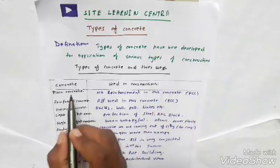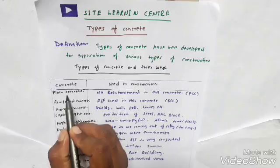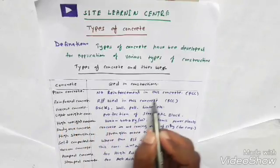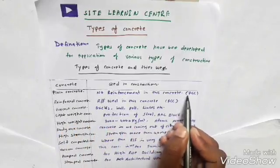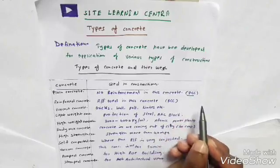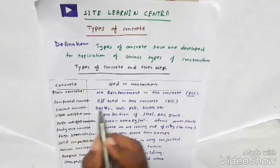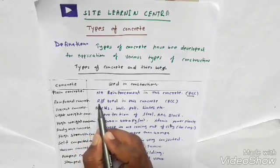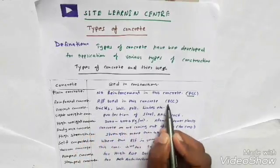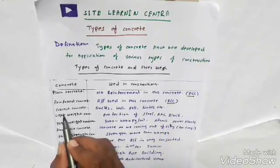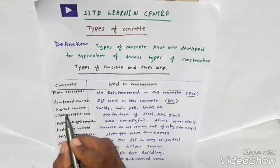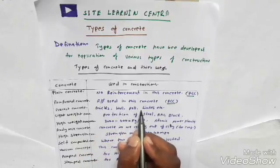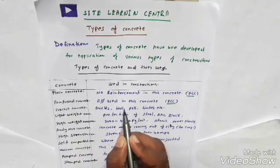First is plain concrete. In plain concrete, there is no reinforcement — this concrete is called PCC (Plain Cement Concrete). The second is reinforced concrete, where we have reinforcement steel inside the concrete — this is called RCC (Reinforced Cement Concrete).